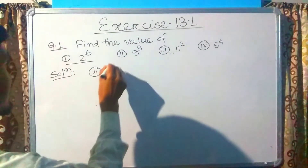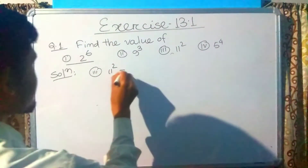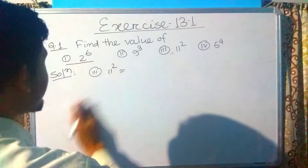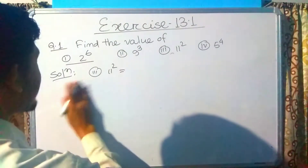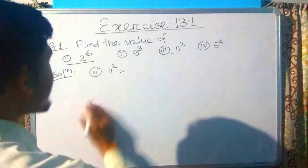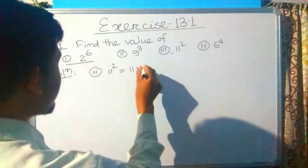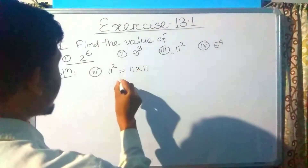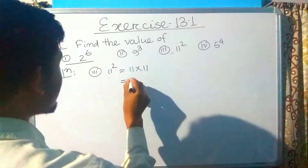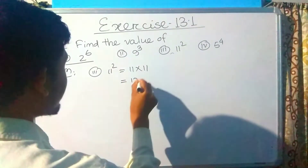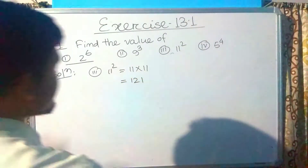Next is 11 squared. 11 squared means 11 is multiplied 2 times. So 11 multiplied by 11, which is 121.